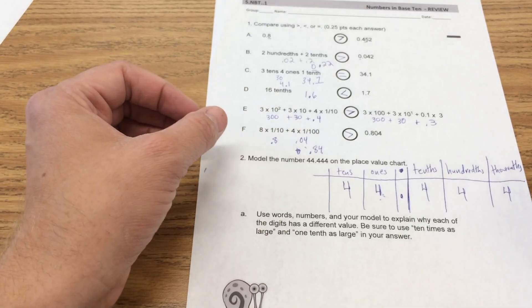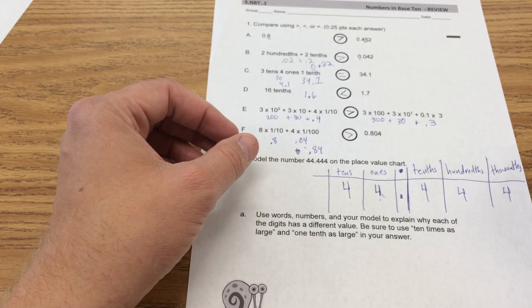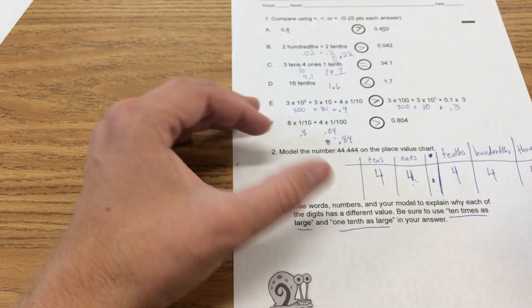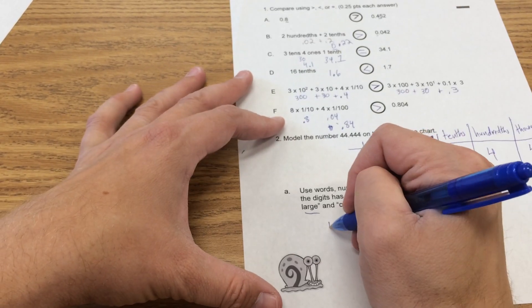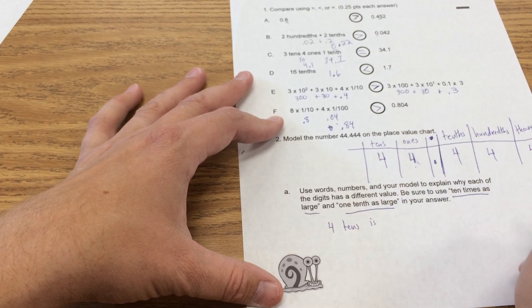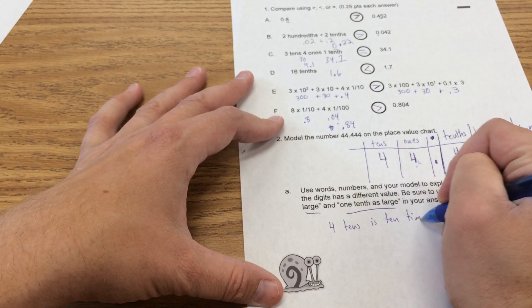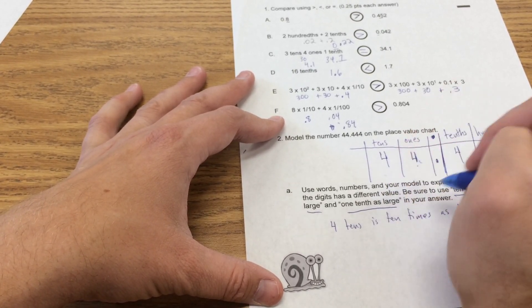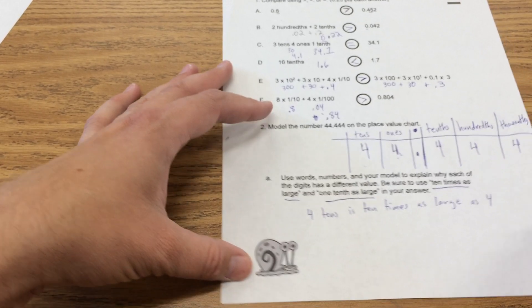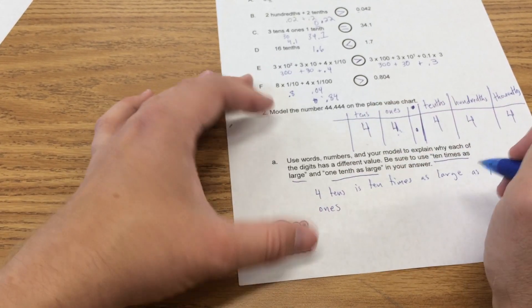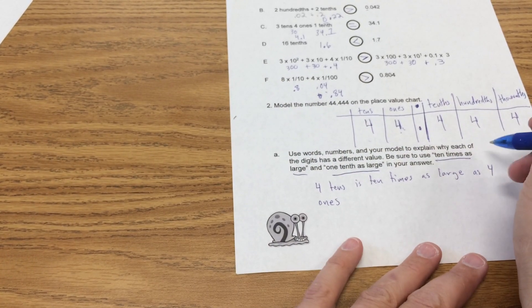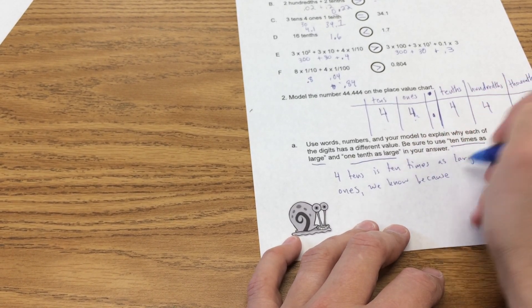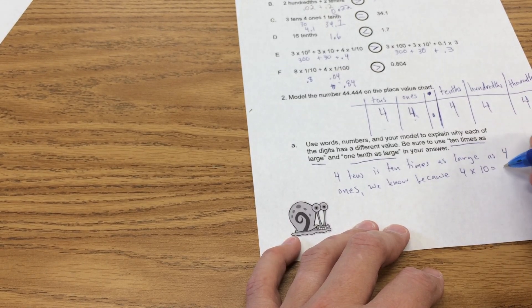Use words, numbers, and your model to explain why each of the digits has a different value. Be sure to use 10 times as large and 1 tenth as large in your answer. Okay. 4 tens is 10 times as large as 4 ones. Right? We know that because 4 times 10 equals 40.